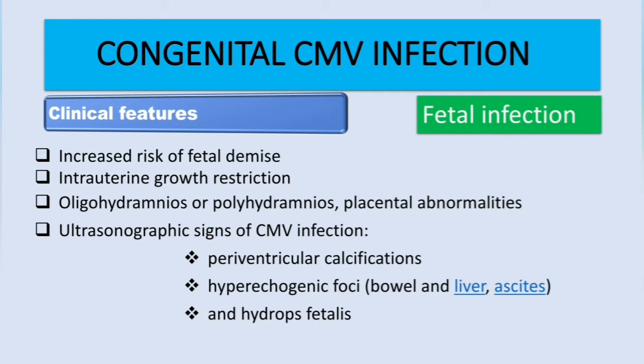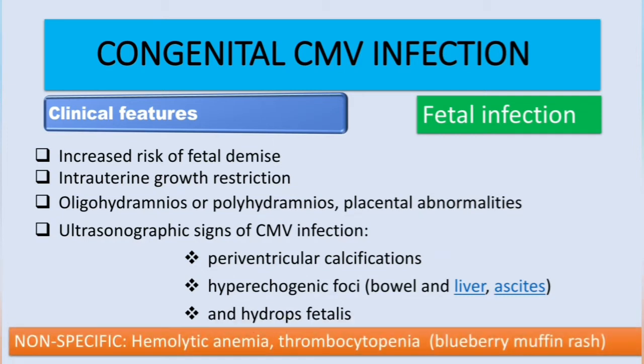Hydrops fetalis — which is generalized edema and accumulation of fluid in serous cavities such as pleural effusion, pericardial effusion, and ascites — is also a sign. There are also non-specific symptoms common to other TORCH infections, including hemolytic anemia, thrombocytopenia, blueberry muffin rash, and hepatosplenomegaly.